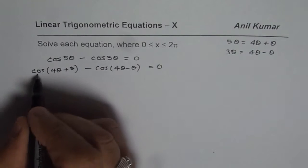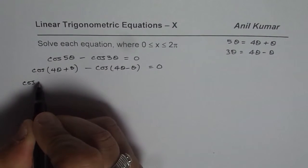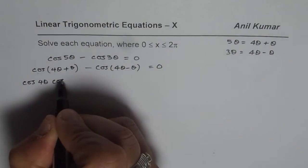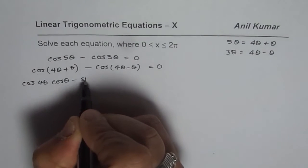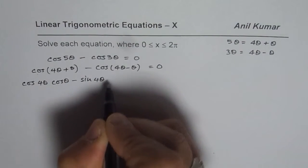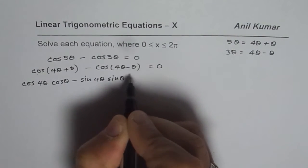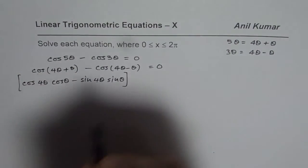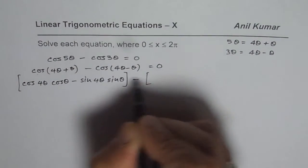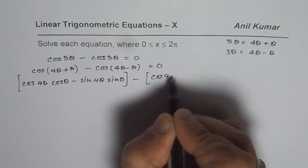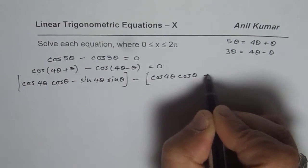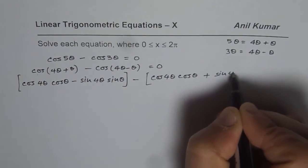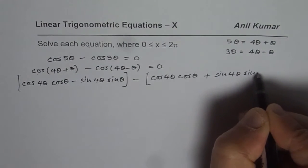Now let us expand this. We get cos 4θ cos θ minus sin 4θ sin θ for the first term. For the second term we get cos 4θ cos θ plus sin 4θ sin θ.